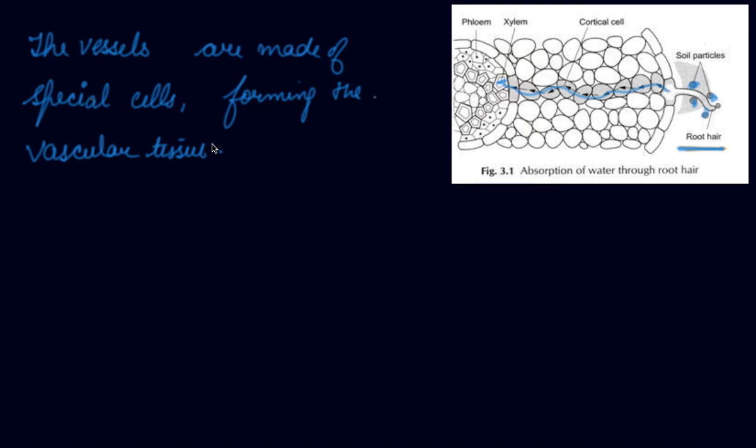The food that has been prepared by the leaves is transported to all parts of the plant. This is done through the vascular tissue known as phloem. They help in the transportation of substances in the plants.